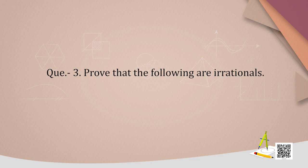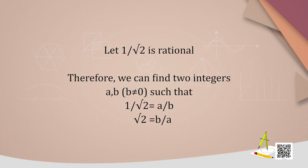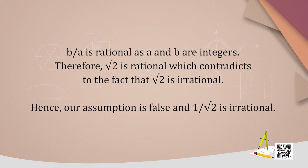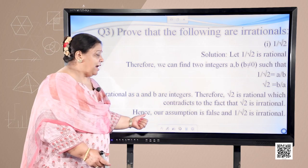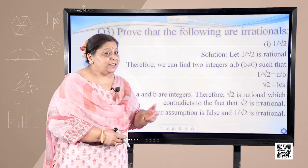Let us prove the following are irrational. First: 1/√2. Let 1/√2 be rational. Therefore we can find two integers a and b, b not equal to 0, such that 1/√2 = a/b. Taking the reciprocal, √2 = b/a. Now b/a is rational since a and b are integers, therefore √2 would also be rational, which contradicts the fact that √2 is irrational. Hence our assumption is false and 1/√2 is irrational.